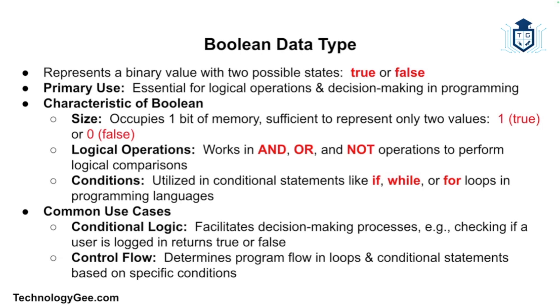In many programming languages, Boolean values are used in conditional statements such as if, while, or for loops. Booleans are most commonly used in decision-making processes. For example, when you check whether a user is logged in, the result is either true or false. In loops and conditionals, Booleans help control the flow of a program based on whether conditions are met or not. Booleans are critical for writing programs that make decisions based on conditions.